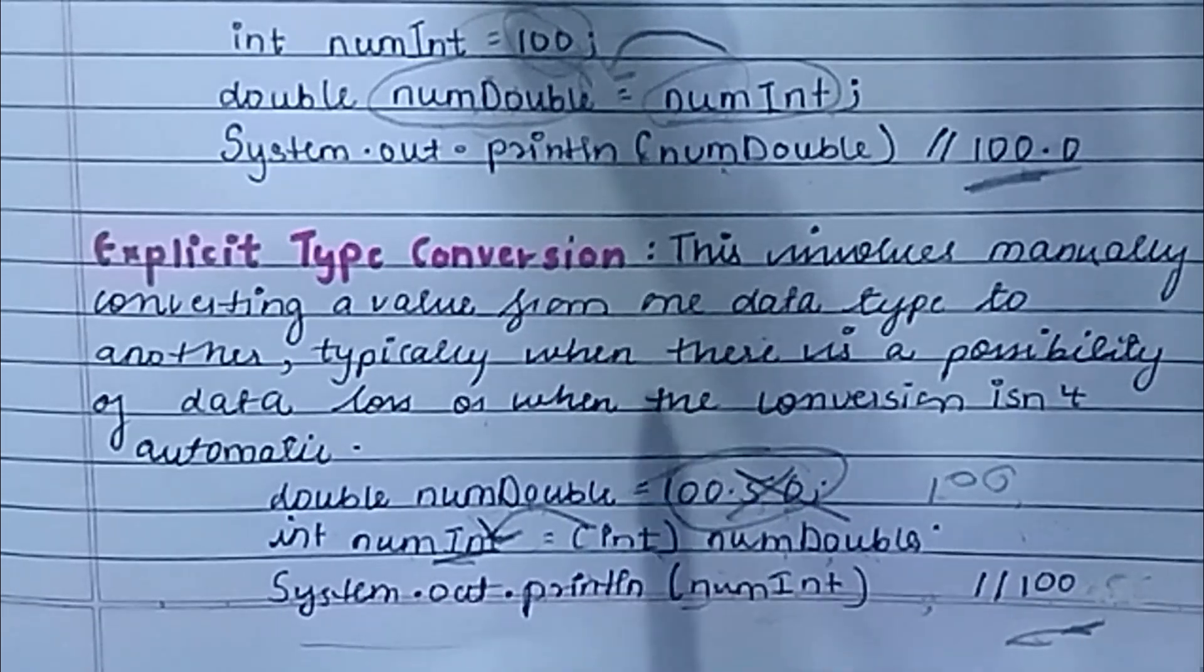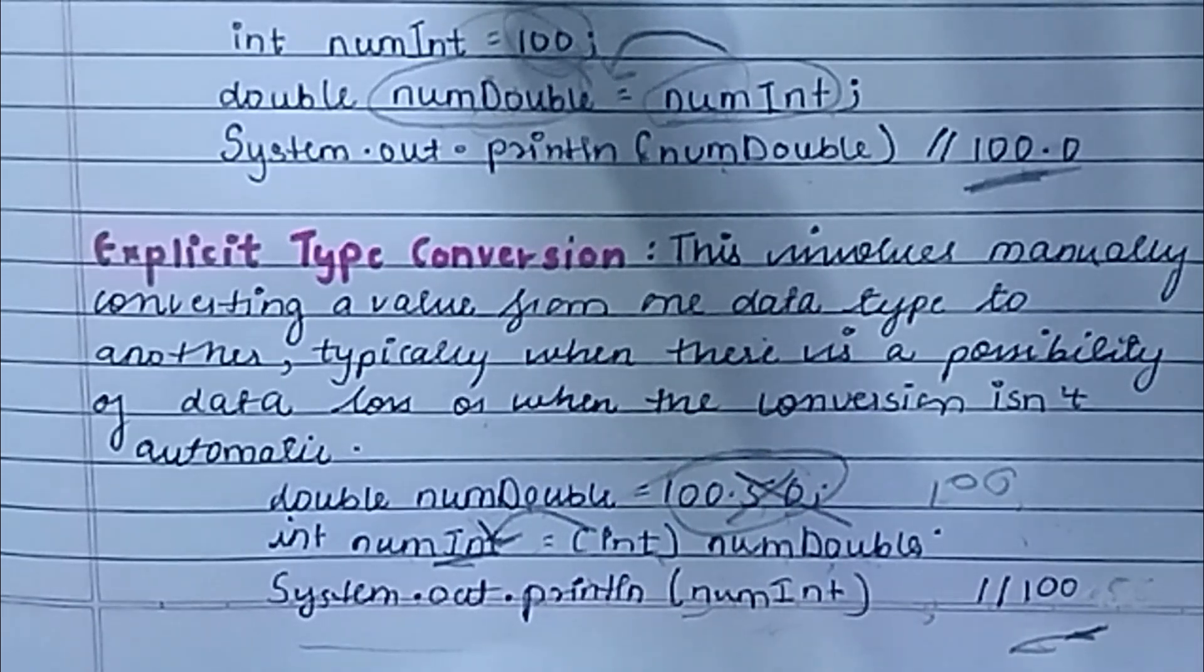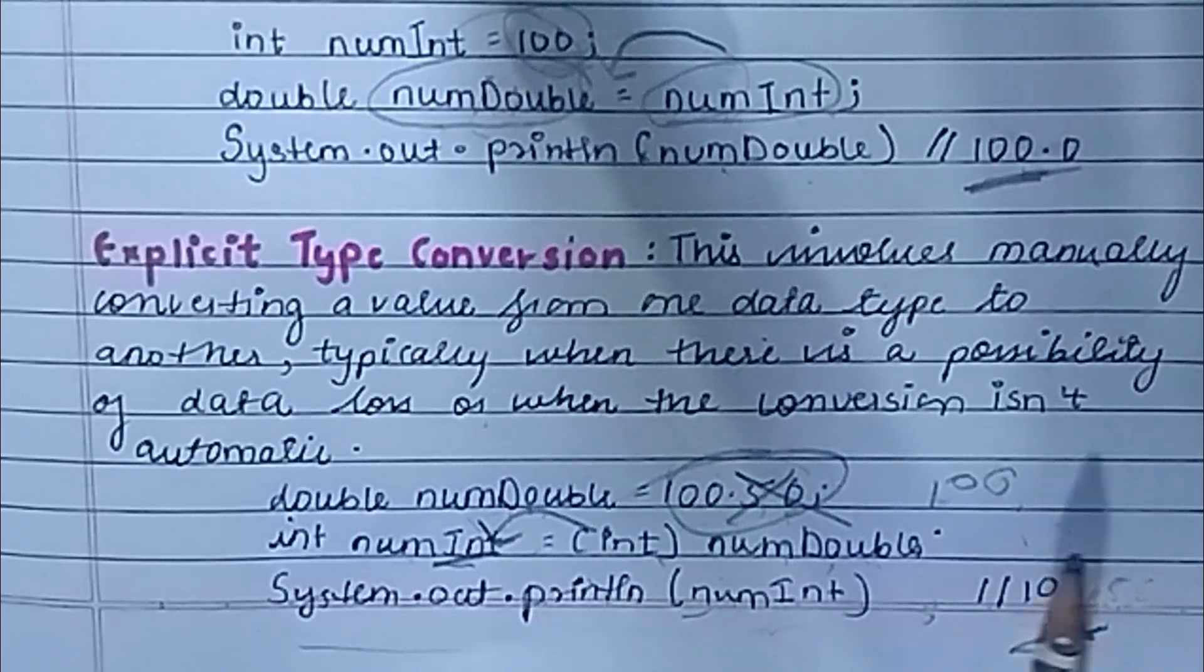When we were doing implicit conversion, double capacity was large enough to store int. But int's capacity is not large enough for double. So when double is stored in int, data loss happens.